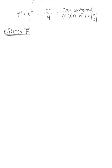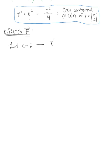To sketch this vector field, we want to choose a value for C. Looking at the arbitrary level curve, the easiest value of C to pick is 2 — it's not an exclusive solution, but it's the easiest one. If we let C equal 2, our level curve becomes x squared plus y squared equal to 2 squared over 4, which is 1. And that's our unit circle!